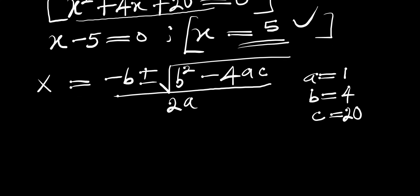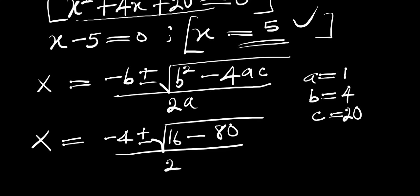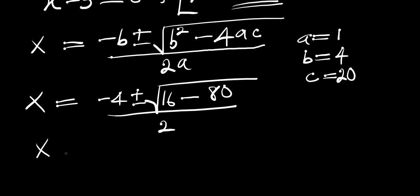Substituting into the formula, we have x equals negative 4 plus or minus square root of b² which is 16, minus 4 times 1 times 20 which is 80, divided by 2a which is 2. So we have x equals negative 4 plus or minus square root of negative 64, divided by 2.